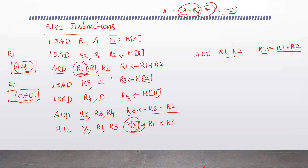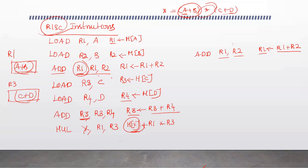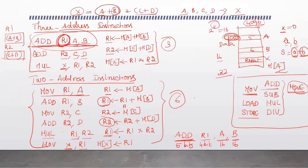We will study RISC (Reduced Instruction Set Computer) in detail later. This was included here just to understand the number of address fields used in different instruction formats. I hope this is clear — if you have any doubts, you can clarify now.